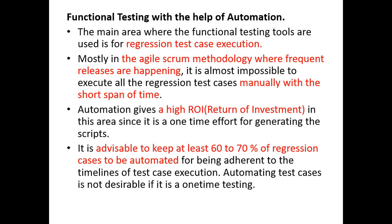The main area where functional testing tools are used is for regression test case execution. Mostly in agile scrum methodology where frequent releases are happening, it is almost impossible to execute all the regression test cases manually within a short span of time. Automation gives a high ROI (return on investment) in this area since it is a one-time effort for generating these scripts. It is advisable to keep at least 60 to 70 percent of regression cases automated to meet test execution timelines.